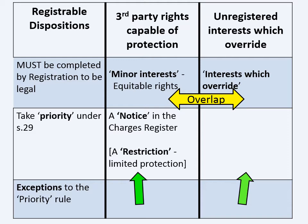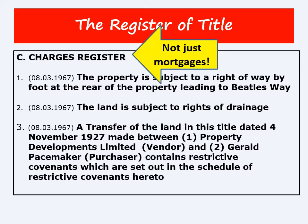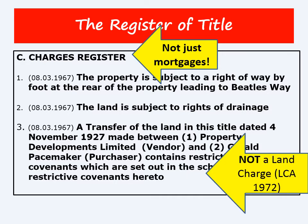Here's a reminder of the charges register of the property from the first video — 28 Keisha Avenue. Although it's called the charges register, it doesn't only contain charges or mortgages; it also contains details of other third party rights which burden the land, such as easements and restrictive covenants. Also note it has nothing to do with land charges under the Land Charges Act 1972 — that only applies to unregistered title. The Land Charges Act is a completely different set of rules and has nothing to do with the registered title system.